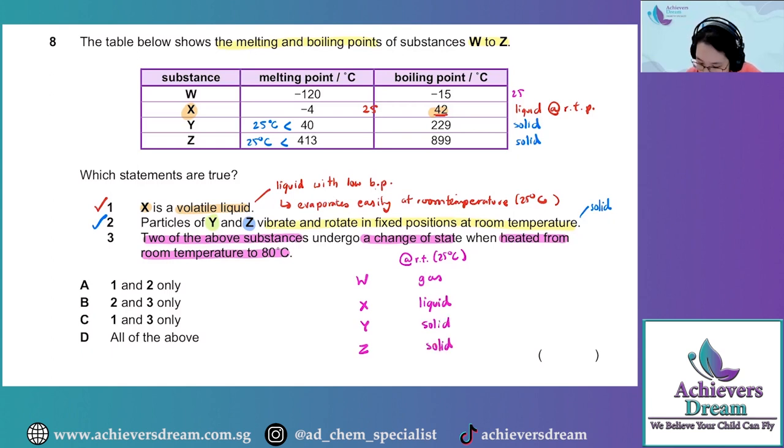So what about at 80 degrees Celsius? W would still be a gas because it's still above the boiling point. X would be a gas as well because 80 is above 42, so X would already have boiled off. As for Y, 80 is between the melting and boiling point, so it would be a liquid at 80 degrees Celsius. Whereas Z, 80 is still below 413, so it is still a solid.